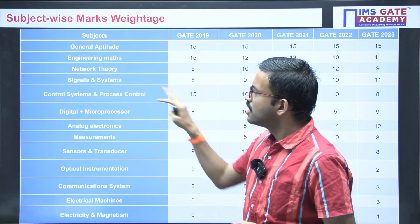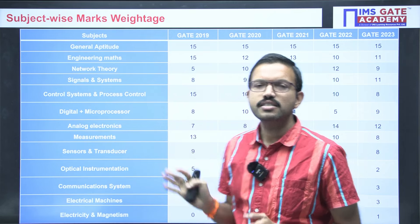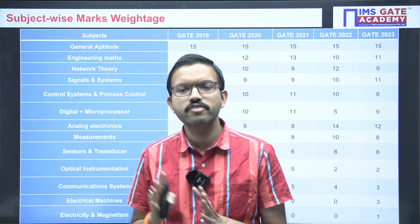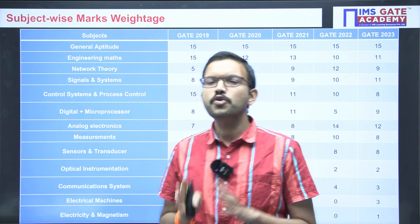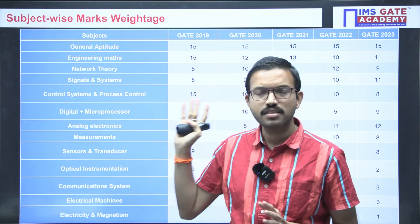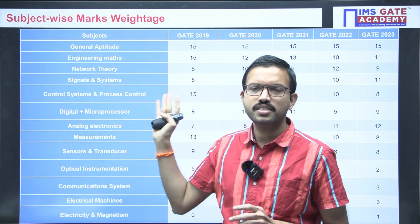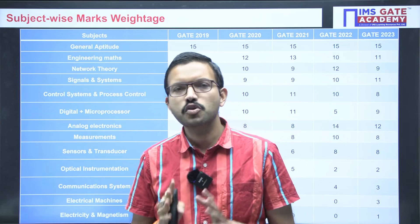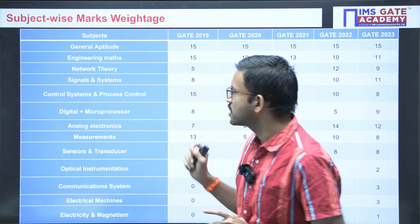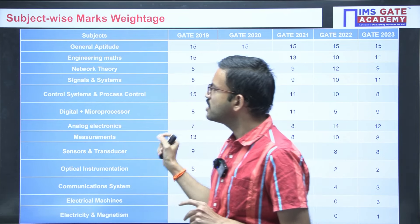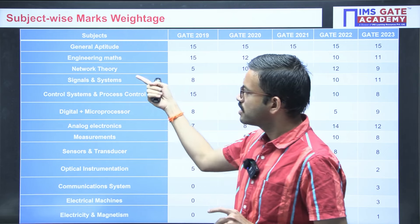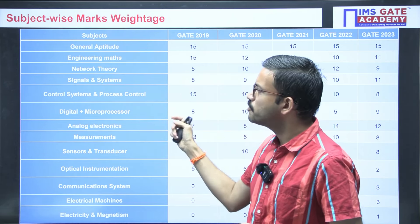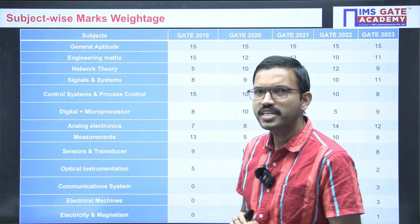In general, for EC, electrical, and IN together, we have seven subjects common for all three branches. Whoever prepared these common subjects thoroughly can easily score good marks. But in this particular year, regarding network theory and digital, they gave a little less number of marks from these two subjects.